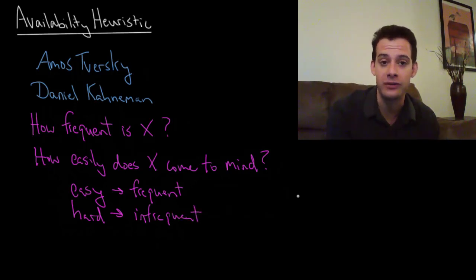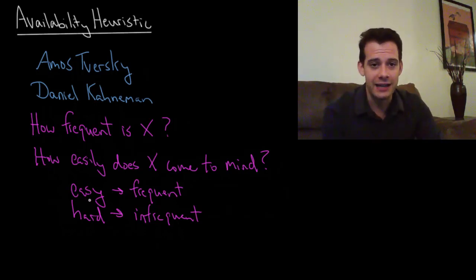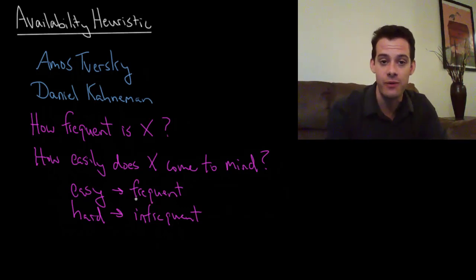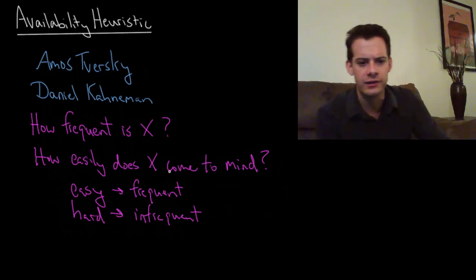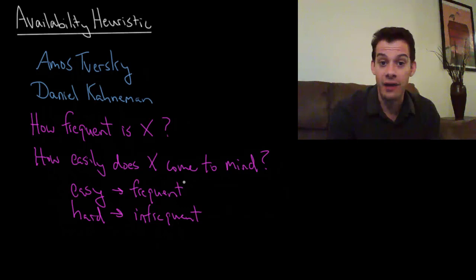And this is probably what happened with this question about the letter k. The thing is, it's easy to bring words to mind based on their first letter. It's hard to bring them to mind based on their third letter. But this actually doesn't have anything to do with their frequency. It comes with how we think about words. It's easy to bring them to mind by their first letter, even if they're not particularly frequent.